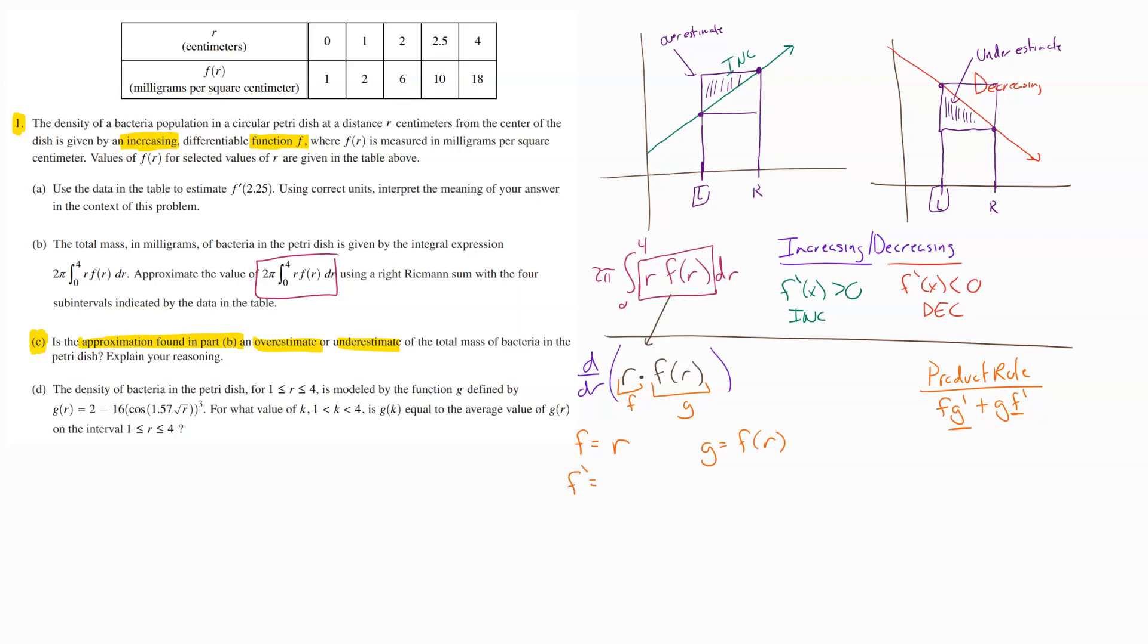So the derivative of r, just doing our power rule here, you bring the one down, you'd get one times r to the zero when you subtract one from the power. Anything to the zero power is just one. So we end up with one. And then g prime here, this is just a notation game. This is f prime of r. Now we'll put all of that together to figure out what our actual derivative is. So then our derivative now, following our product rule, would be f, which is r, times g prime, which would be our f prime of r, plus go grab the g piece, which is f of r, and then multiply that by f prime, which is one.